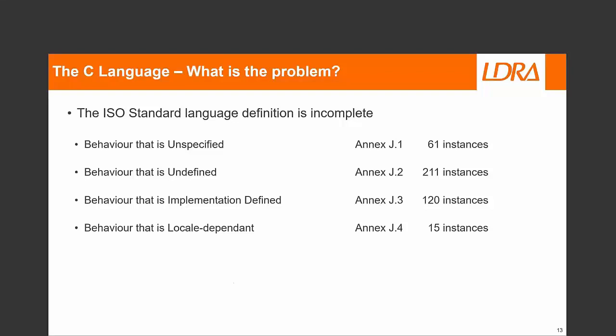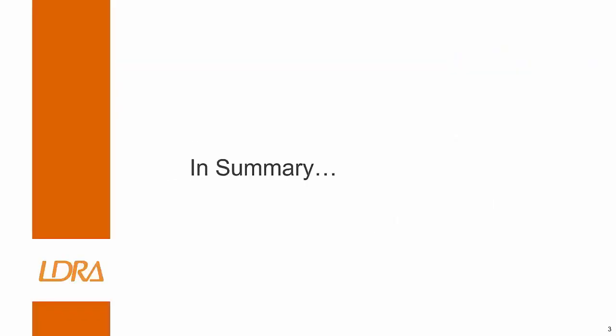That can be a problem, and for some people the answer is simply don't use C. For many years the DOD in America mandated ADA for the very simple reason that C could not be trusted. That restriction was lifted largely because of MISRA C, and the Joint Strike Fighter project's coding guidelines are actually based on MISRA C.